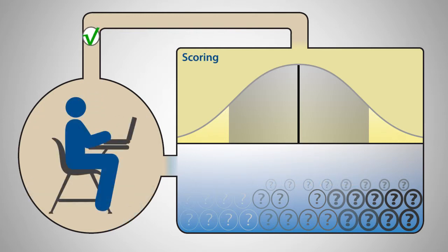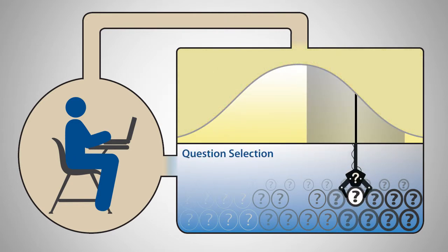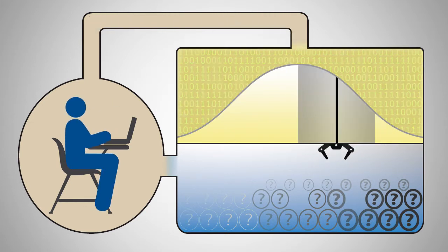The second step, scoring, uses the student's response to determine which test question the student should get next. This cycle continues until the required number of questions, as indicated by the test blueprint, has been administered.